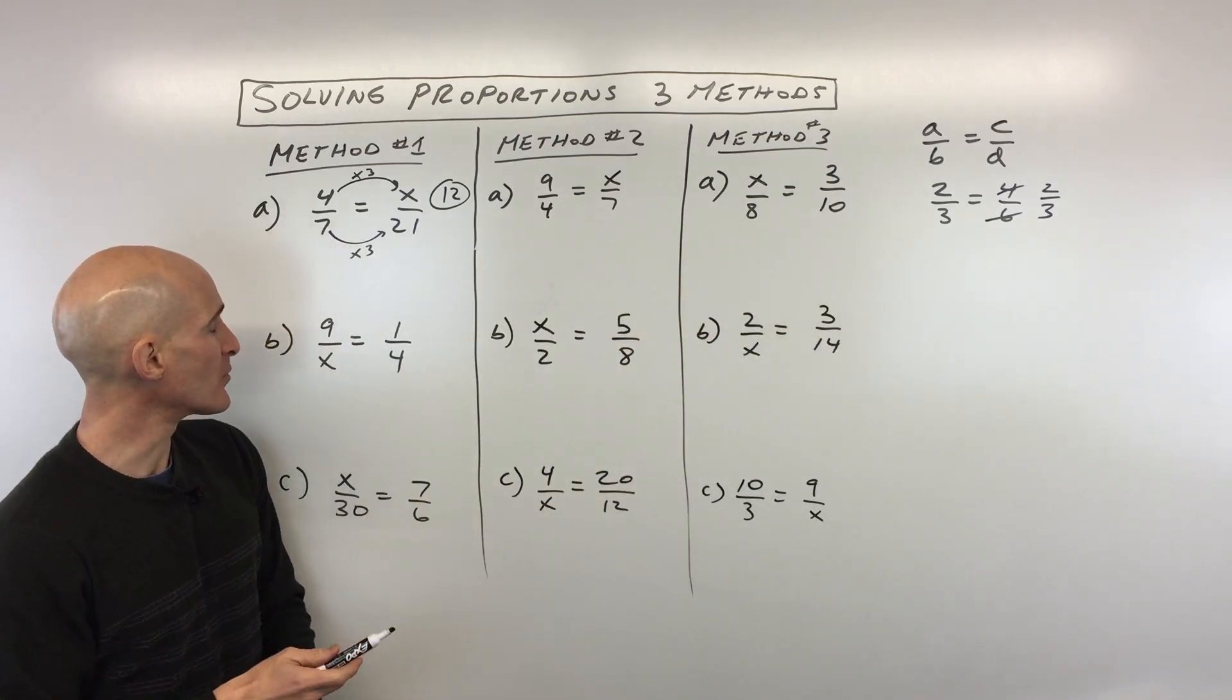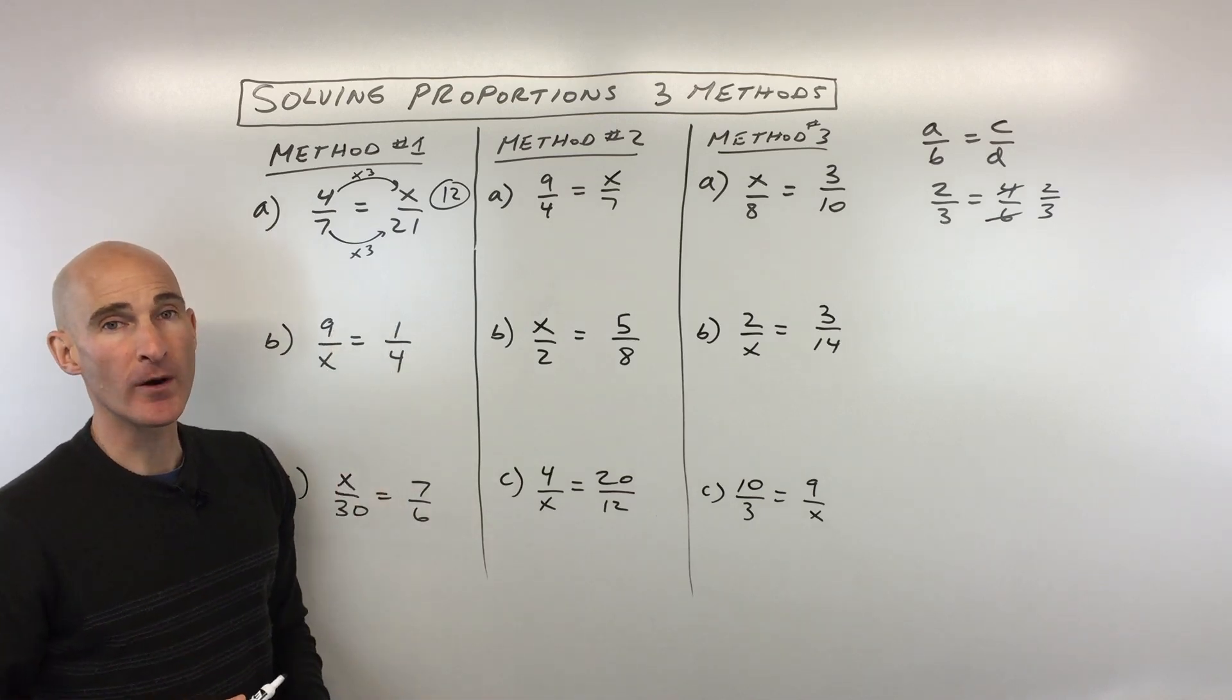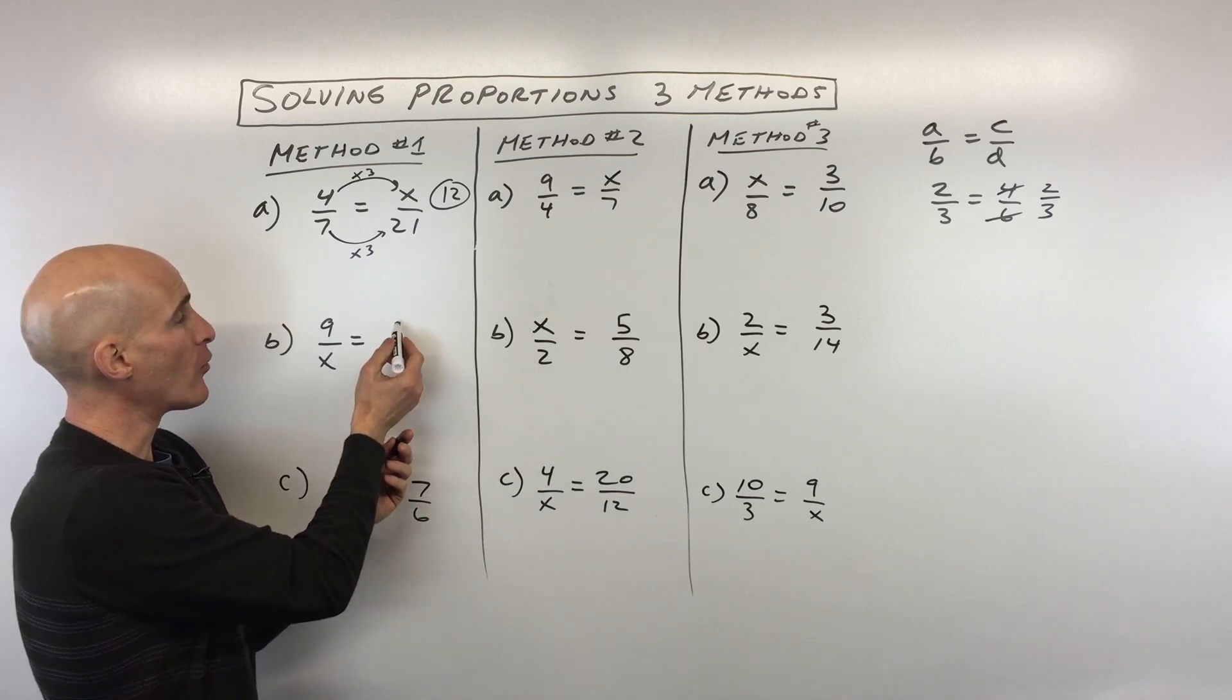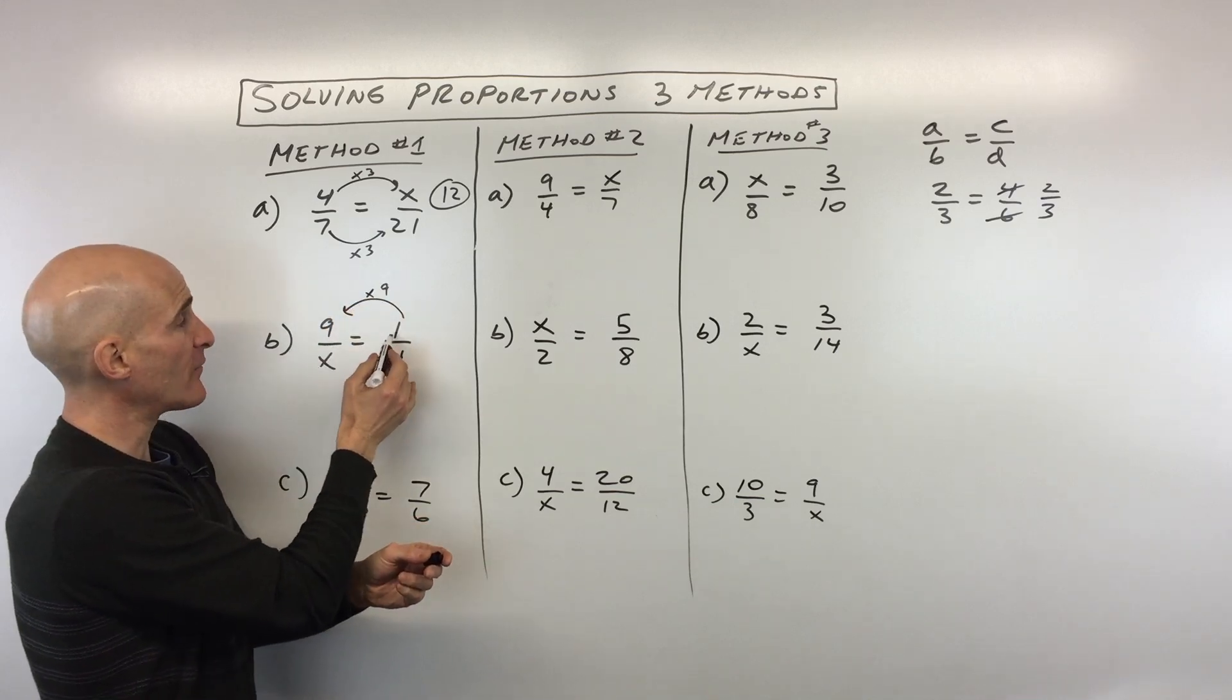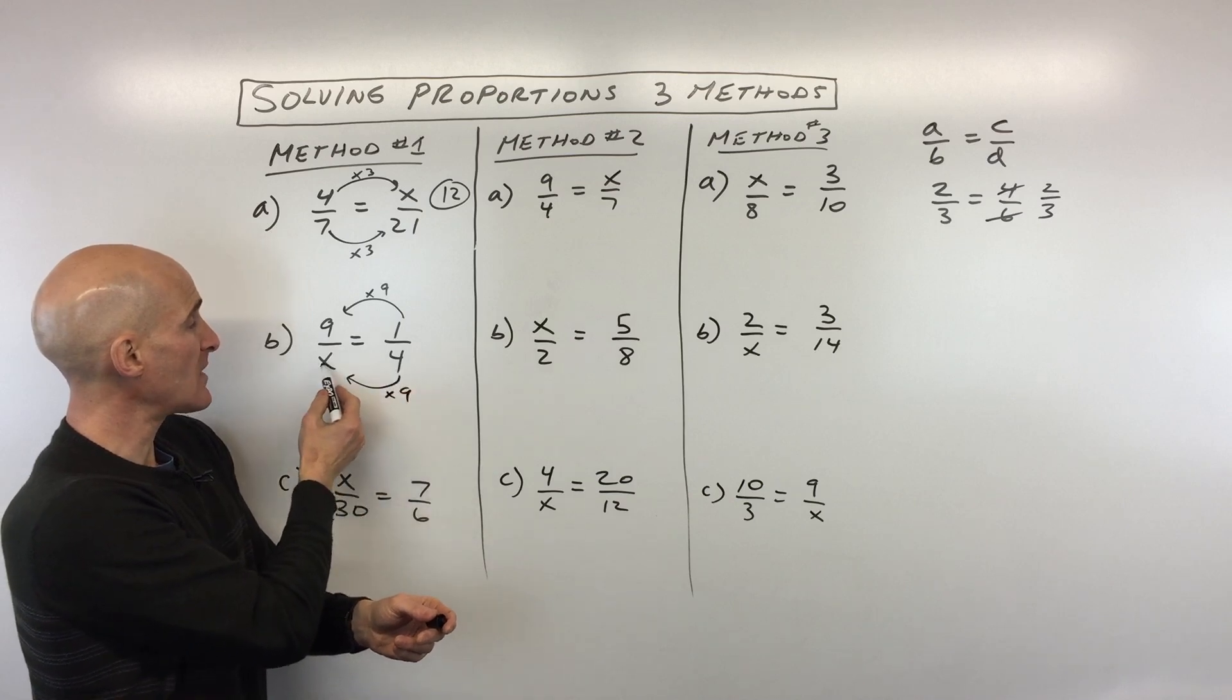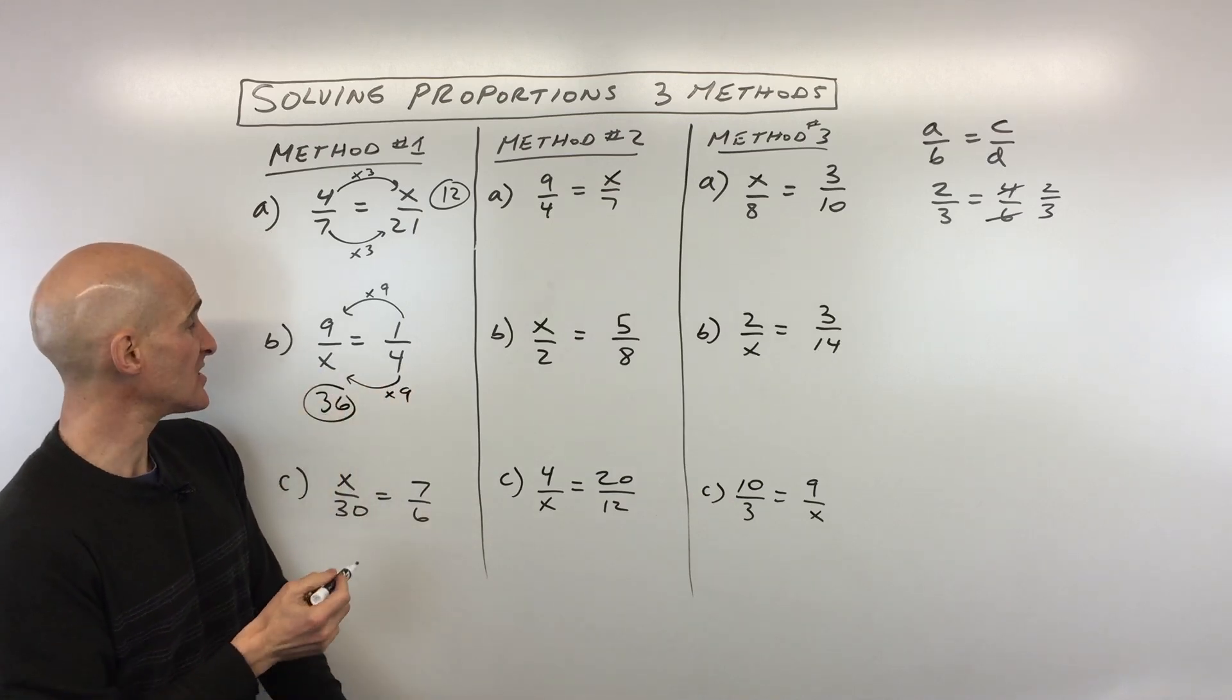Okay, let's go to example number two. So here we've got 9 over x equals 1 over 4. So now in this example, I'm going to actually go from the right side to the left side. So I'm going to say if I take 1 times 9, I get 9. But if I do that to the numerator of this fraction on the right, I have to do the same thing to the denominator and multiply by 9. Well, 4 times 9 is 36.